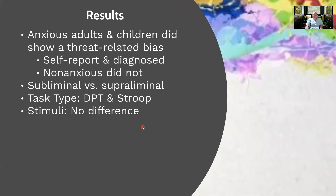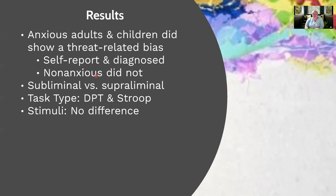Their final results showed that anxious adults and children did show a threat-related bias. It didn't matter if the people had a diagnosis or if it was self-reported high anxiety levels — the threat-related bias was still there. And for the studies that included a non-anxious control group, they did not show that same attention bias to threat. In other words, the finding of attention bias to threat was legitimate and was significantly different than non-anxious groups.